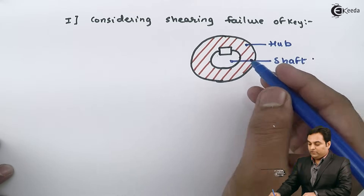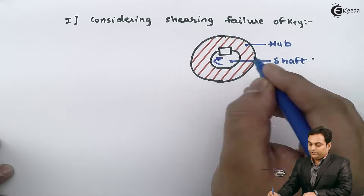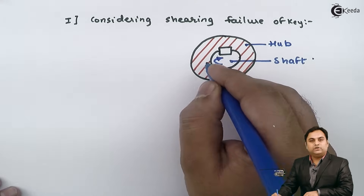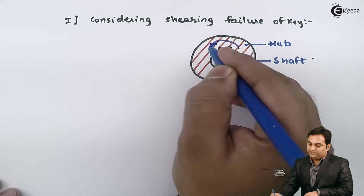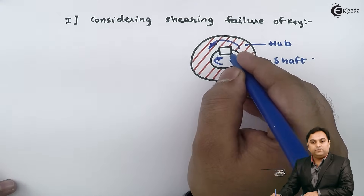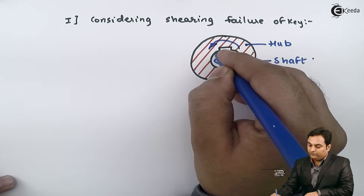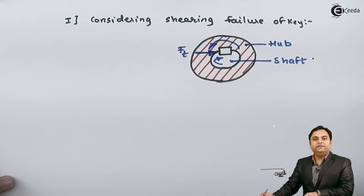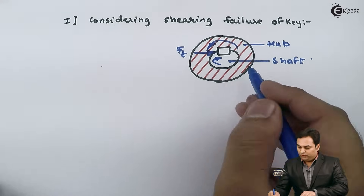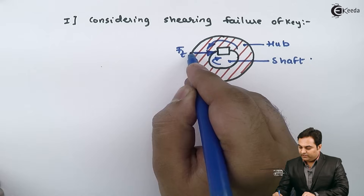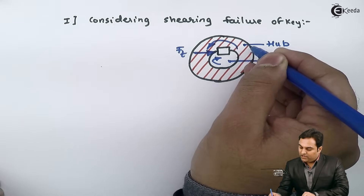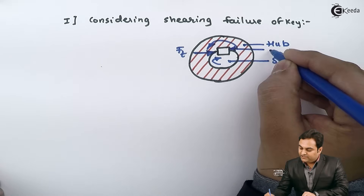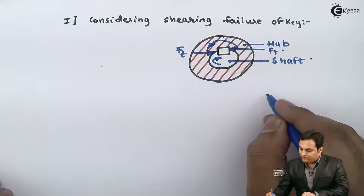The shaft is a rotating member — it will try to rotate, but the hub is stationary at first. When the shaft rotates clockwise, a tangential force acts on the key towards the right. The hub, being stationary, opposes this by offering an anti-clockwise reaction, creating another tangential force acting in the opposite direction.